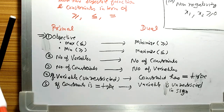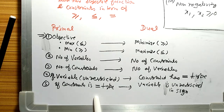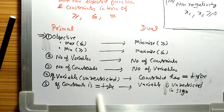To summarize: if a constraint is equal type in the primal form, then in the dual form the variable will be unrestricted; and if the variable is unrestricted in the primal form, then the corresponding constraint in the dual form will be of equal type.